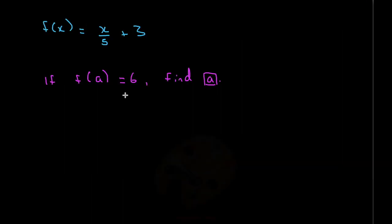Another question for the same function could be: if f(a) is equal to 6, find a. Now, unlike the last question, we don't know what the input is, but we do know what the output is. Some people get confused by thinking that the 6 is the input, but it's not — it's the output, because the function is equal to 6.